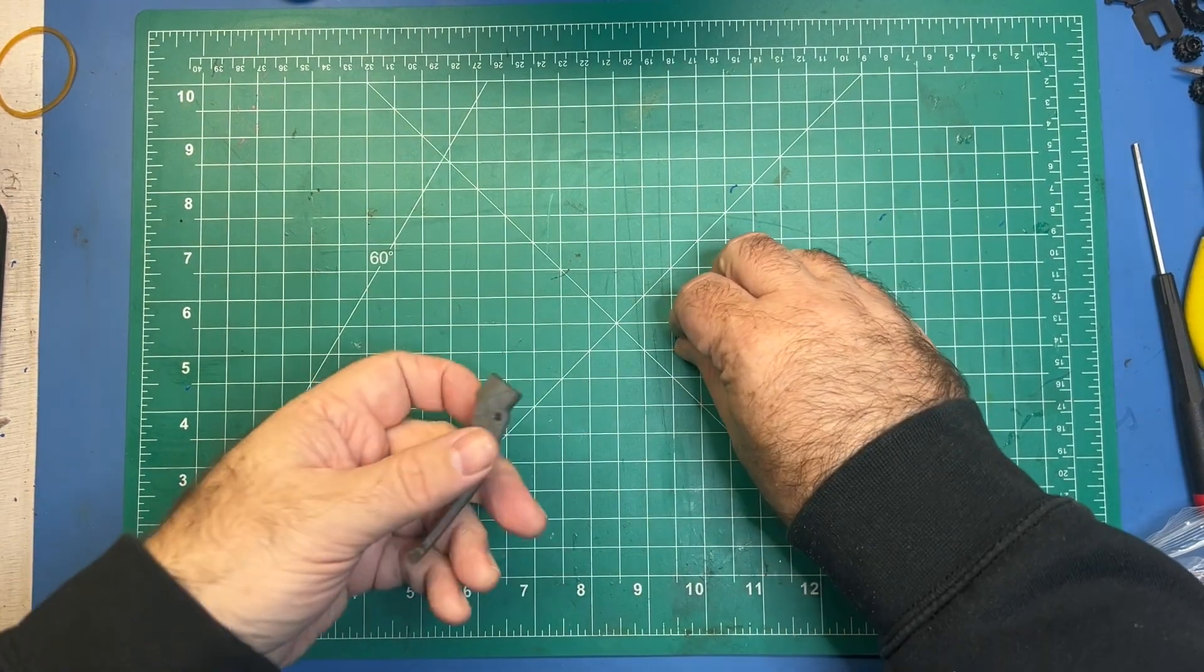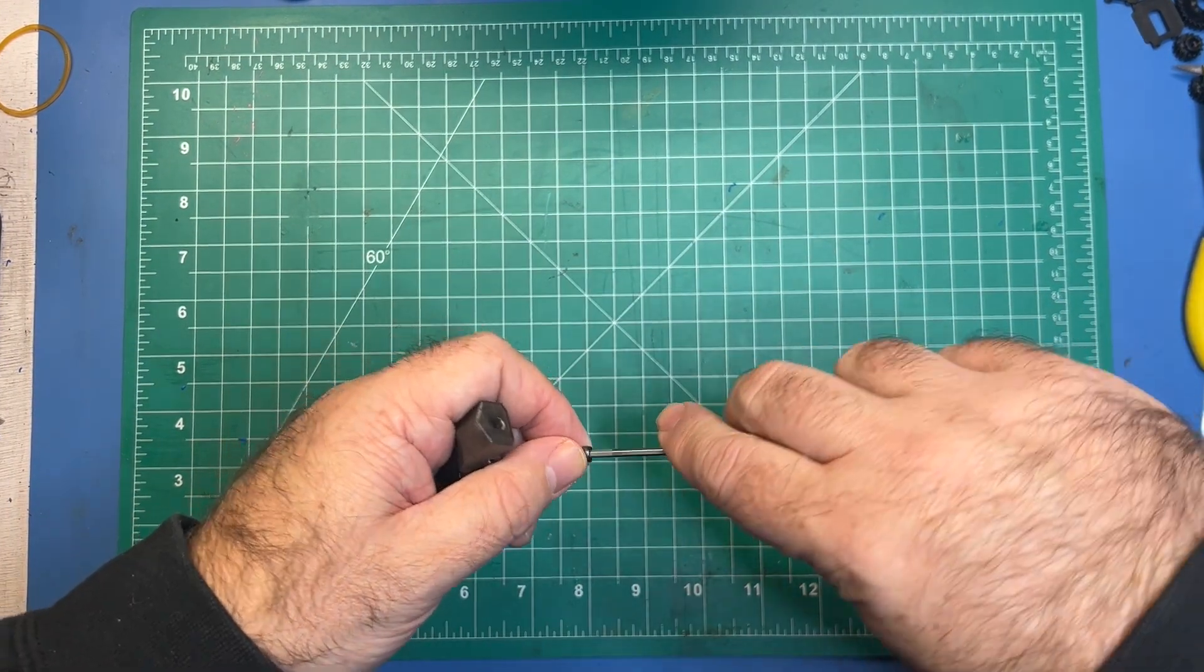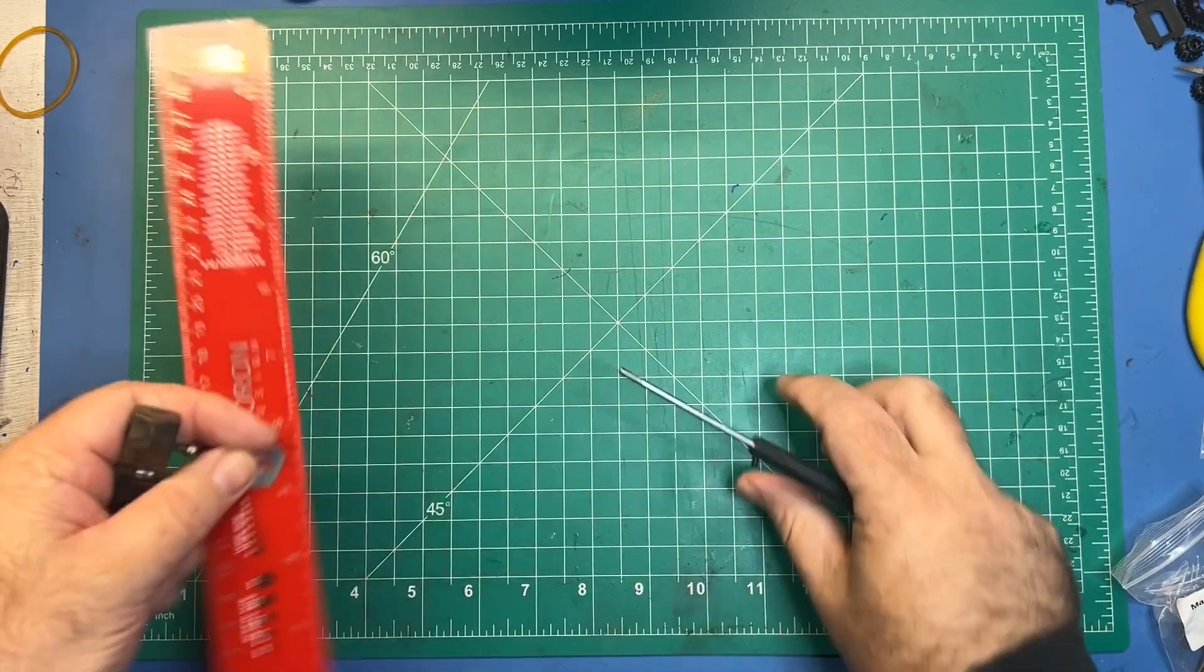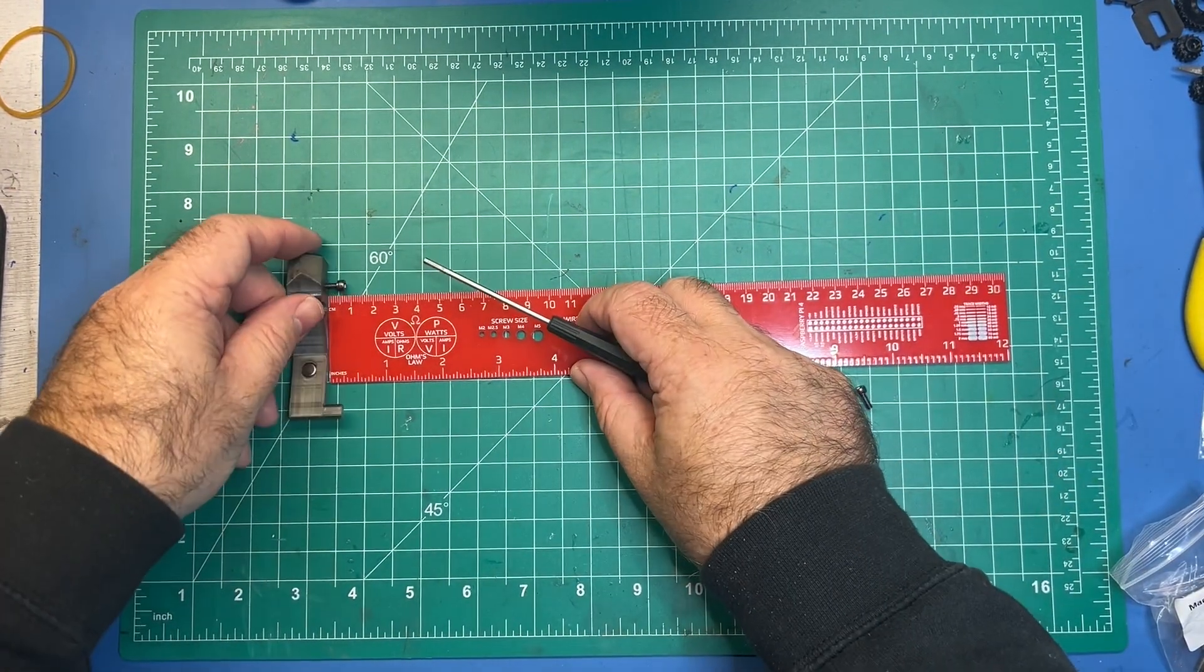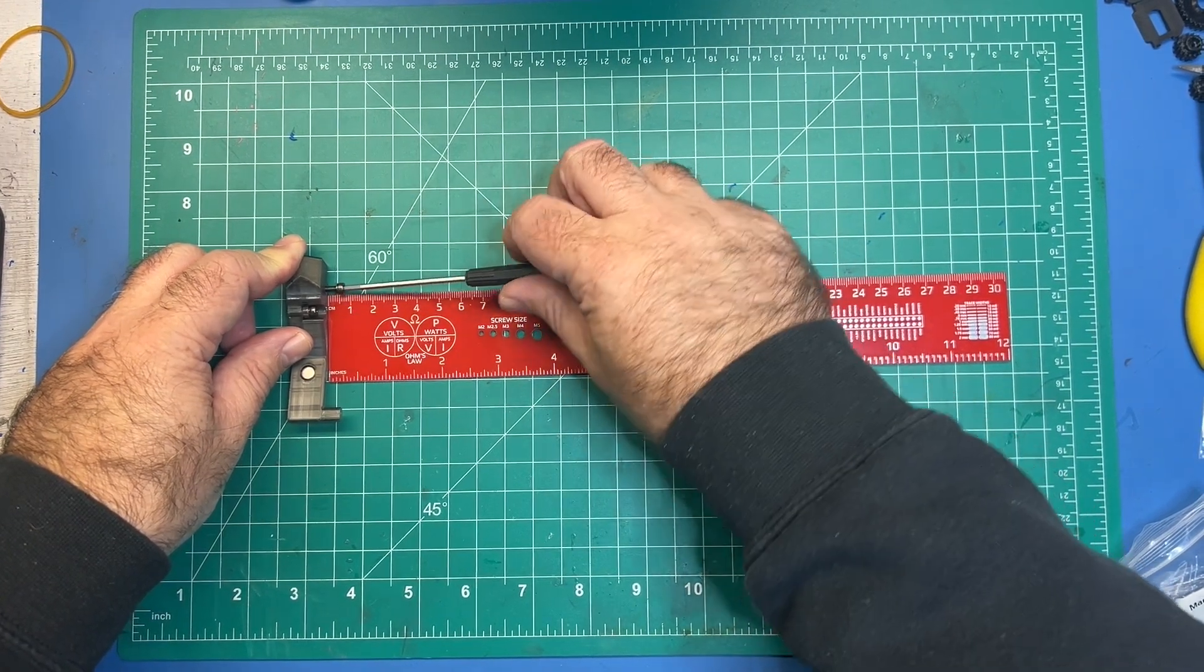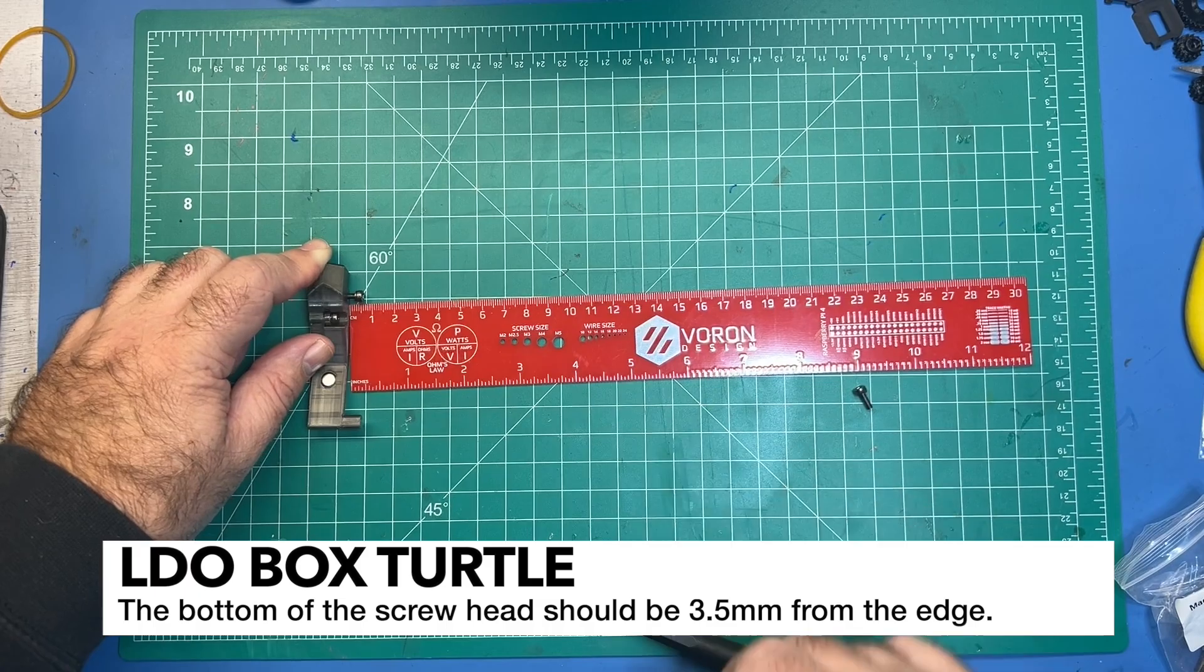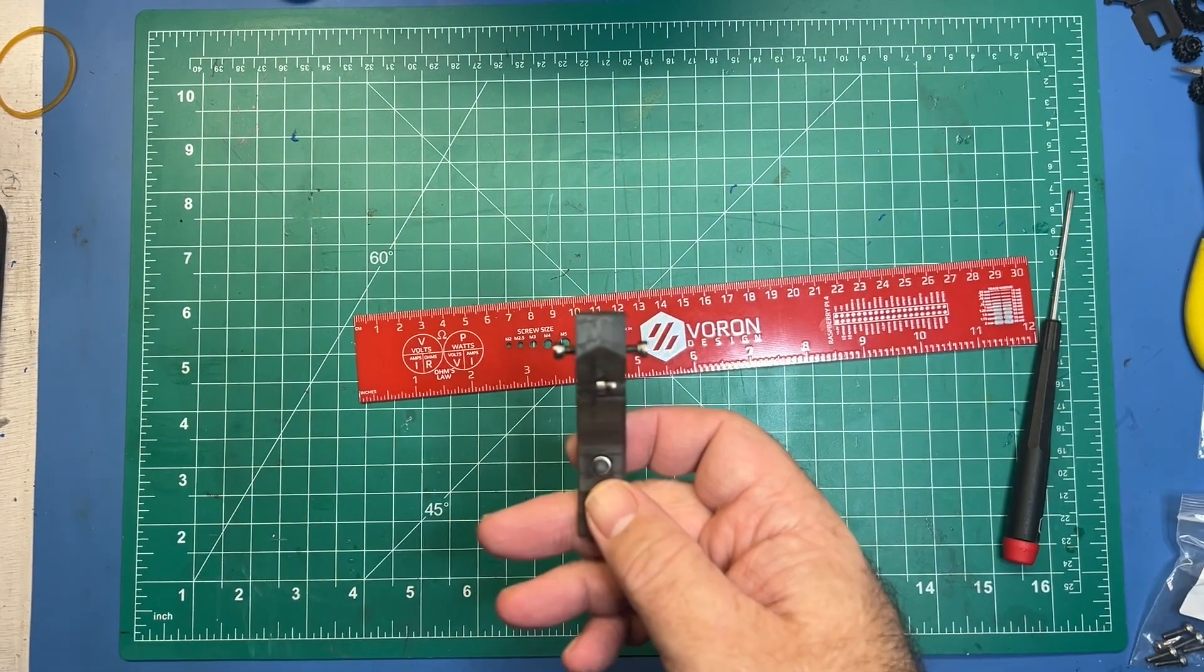And for this step we're going to take two M3x8s and we're going to just get them started in these side holes here. Right there. So just get one started. And then you want to leave about three and a half millimeters between the screw head and the body. So right now it's at about five. So I'm just going to go ahead and tighten that down a little bit more. The bottom of the head is right about three and a half from the ruler here. And then just repeat that for the other side. And there it is completed.